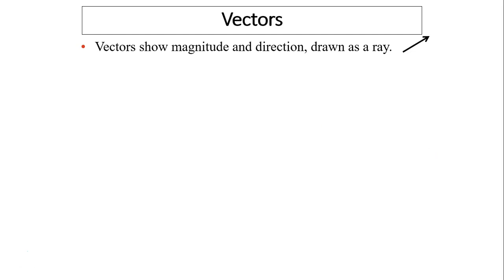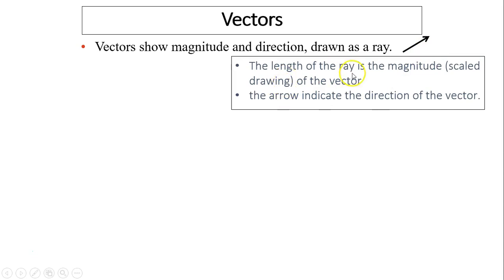Now vectors. Vectors show magnitude and direction. It can be drawn as a ray like this. So in this diagram, the length of the ray represents its magnitude.